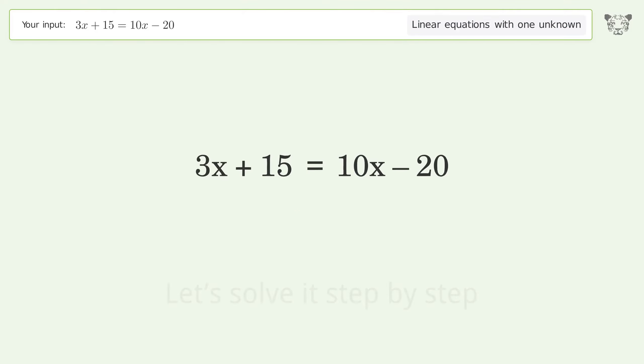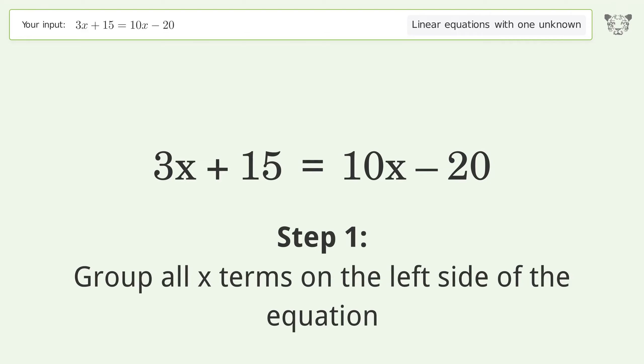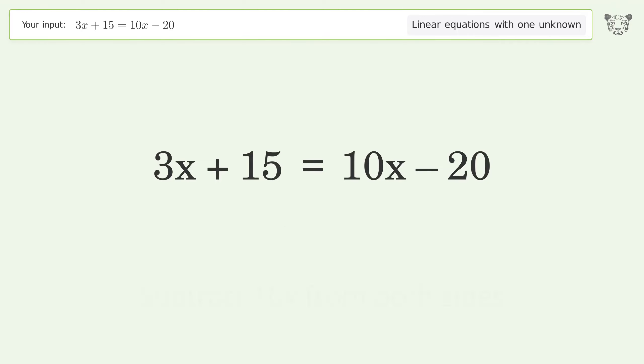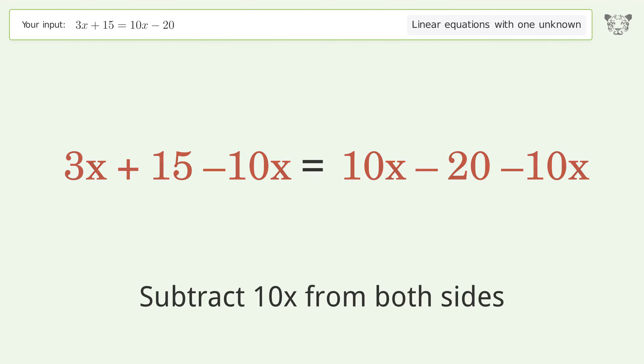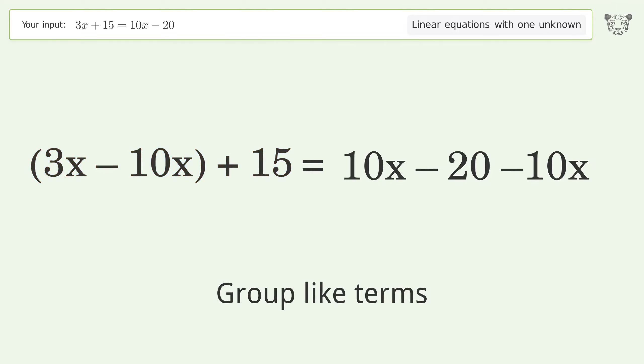Let's solve it step by step. Group all x terms on the left side of the equation. Subtract 10x from both sides. Group like terms. Simplify the arithmetic.